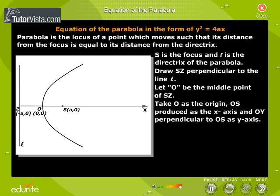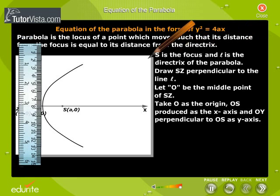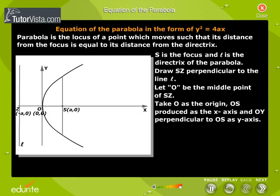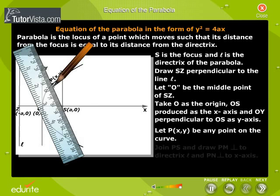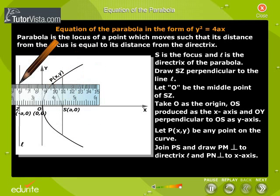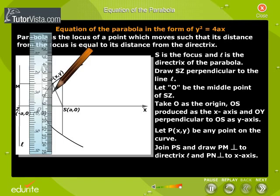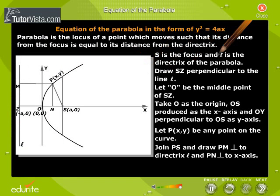Take O as the origin, OS produced as the x-axis and OY perpendicular to OS as y-axis. Let P be any point on the curve. Join PS and draw PM perpendicular to the directrix L and PN perpendicular to the x-axis.